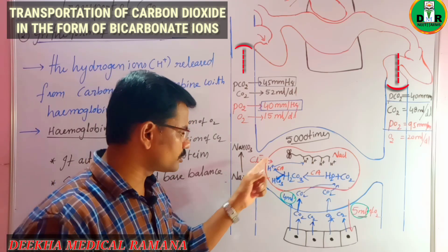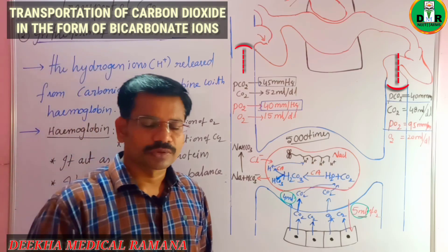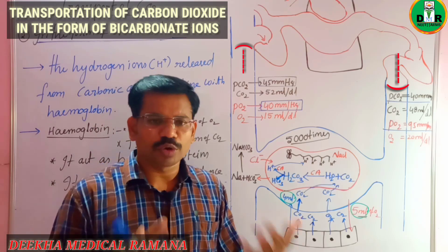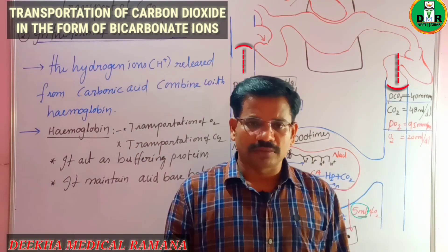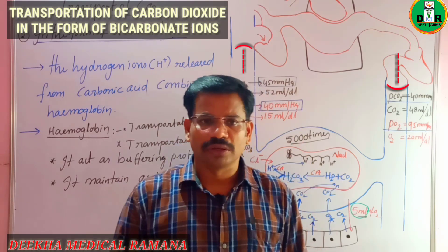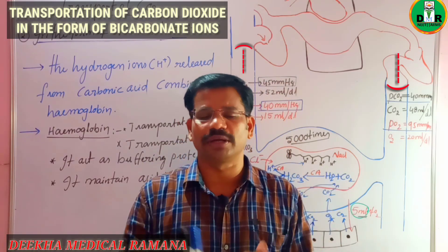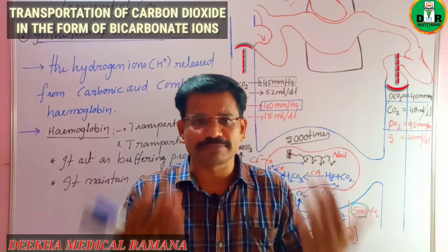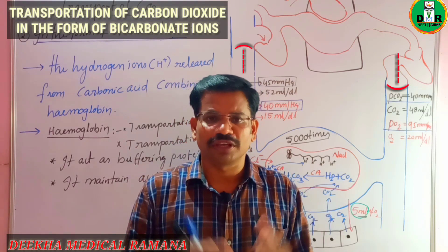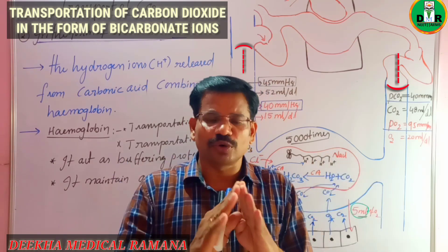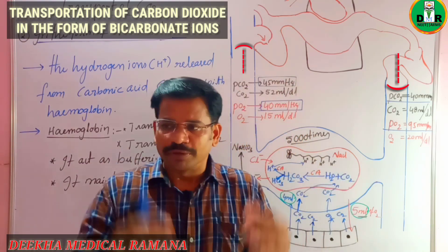The H⁺ ions released are nothing but protons — highly reactive molecules that can react with any substance in the body. These H⁺ ions must be controlled, and hemoglobin plays a very important role in that control. Some plasma proteins also help. If H⁺ ion concentration becomes too high in the blood, it leads to acidosis, which disrupts enzymatic reactions and causes body functions to fail.